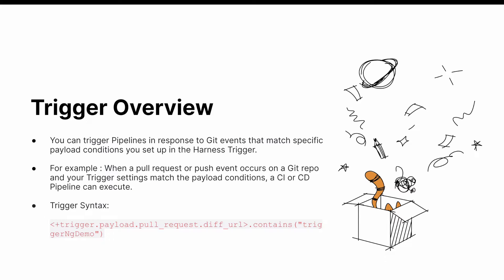For example, if you're raising a pull request or pushing some code to your repository, and if your trigger setting matches with the payload condition that you have specified, the pipeline will start getting executed.